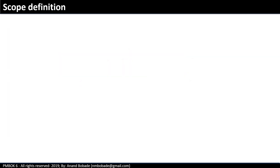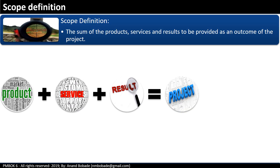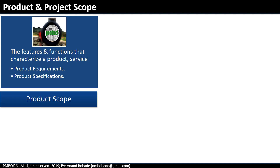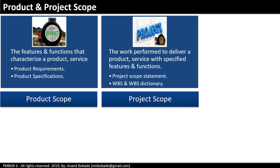Let's go through the scope definition. Scope is the sum of the products, services and results to be provided as an outcome of the project. Some projects may have all three elements or only one or two. For example, a call center upgrade project may deliver a product — improved call center software — and a service — improved call center service. Product scope includes the features and functions that characterize a product or service, generally referred to as product requirement or specification documents. Project scope is the work performed to deliver that product or service with specified features and functions, referred to as the project scope statement, WBS and WBS dictionary.